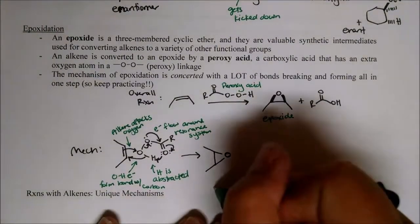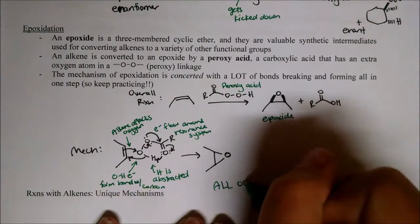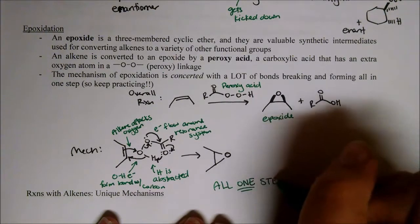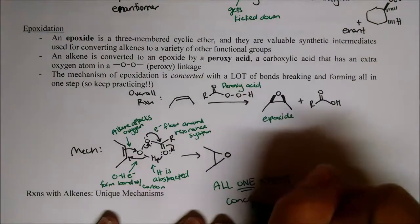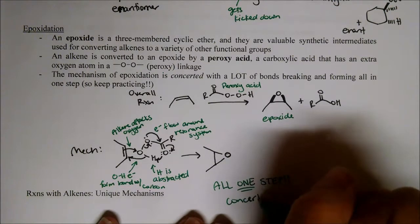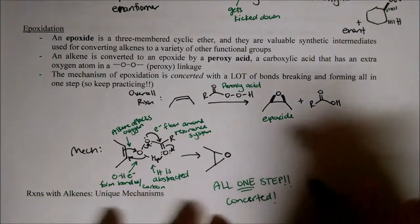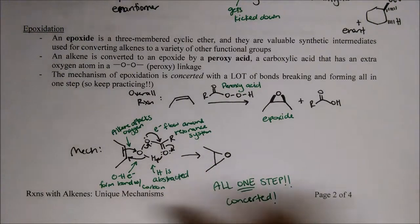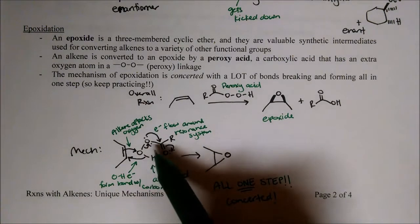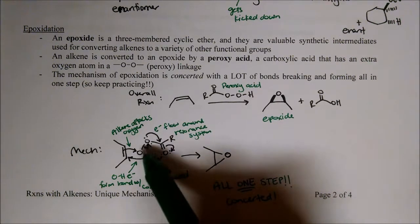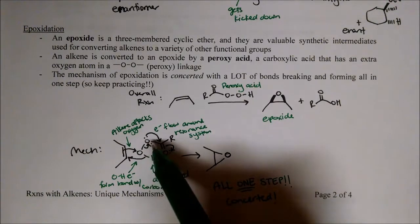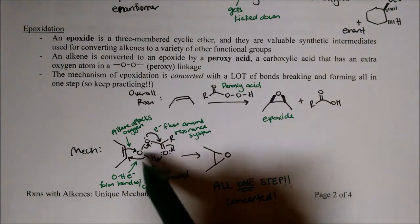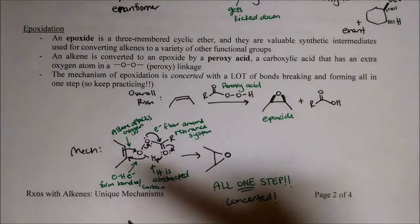This is all one step — a concerted mechanism. Lots of stuff happening all at once. This is a bunch of steps that really do take place simultaneously. What's great about this is we have a nice six-membered transition state — one, two, three, four, five, six. This makes it super stable. This whole cyclic six-membered transition state mimics a cyclohexane ring, so it's super stable. That's why it all happens in one step.